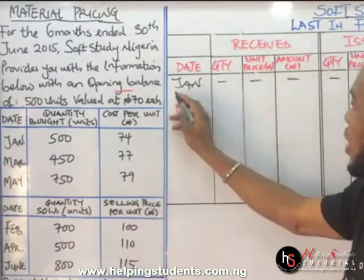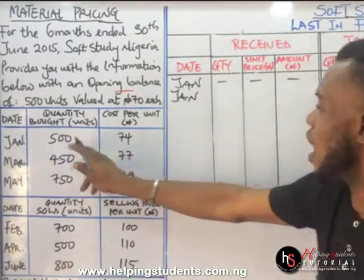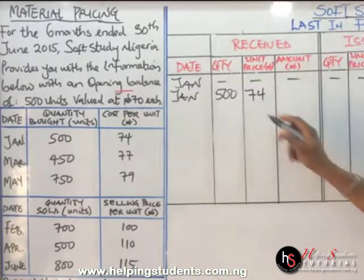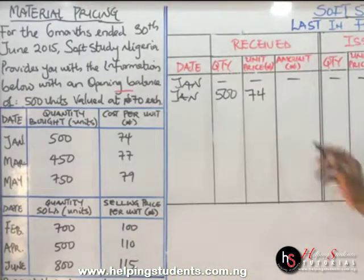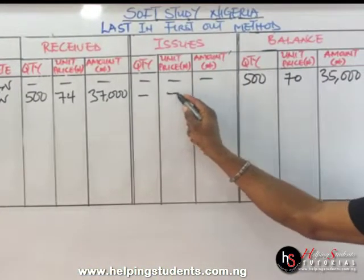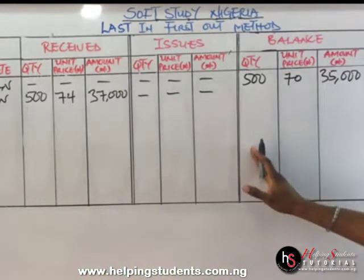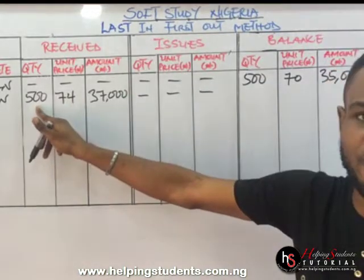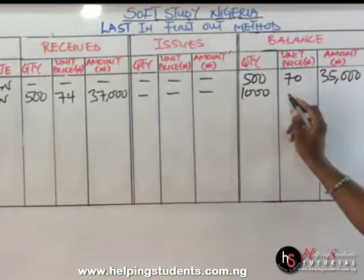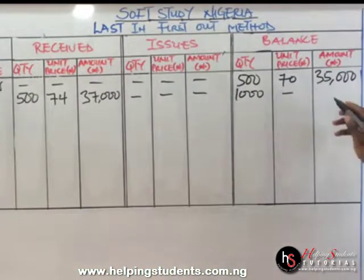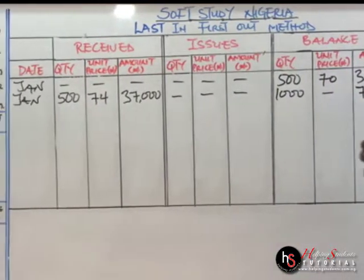Coming to January from the table, we'll have 500 at 74. So 500 at 74, when we multiply these two values, gives us 37,000. Under the issues, we don't have any transaction. Coming over to the balance section: quantity is 500 plus 500, giving us 1,000. Then 37,000 plus 35,000 gives us 72,000. So we are done with January.